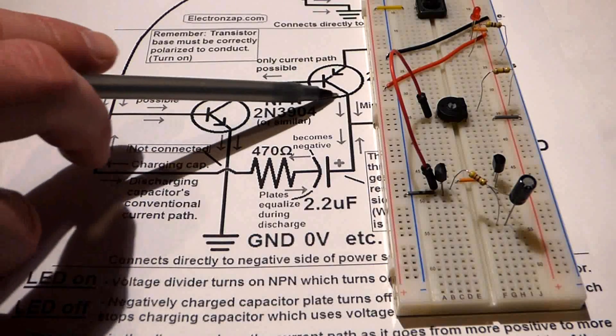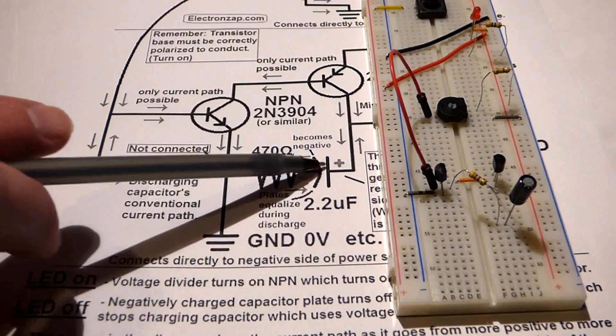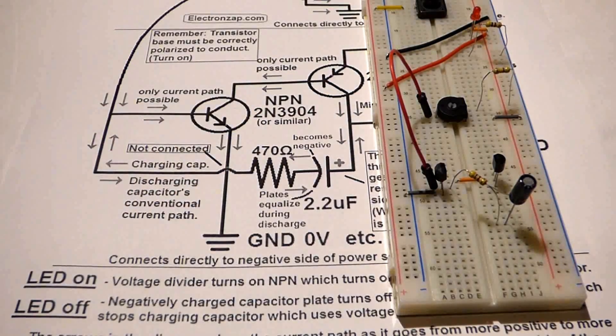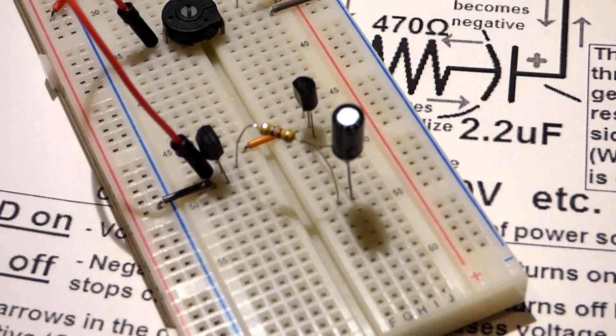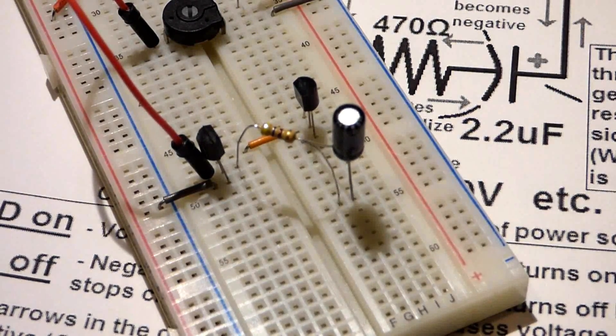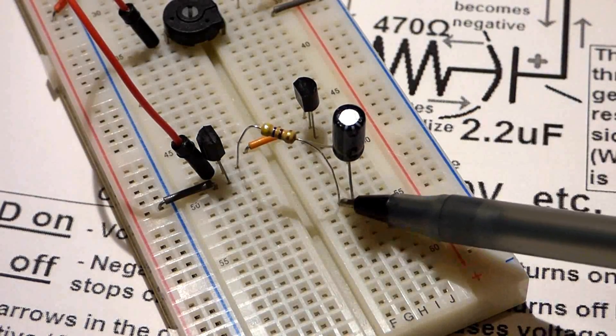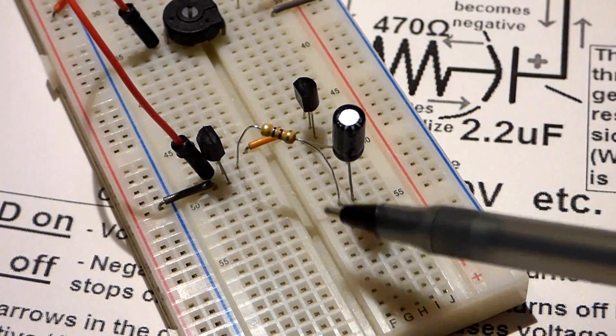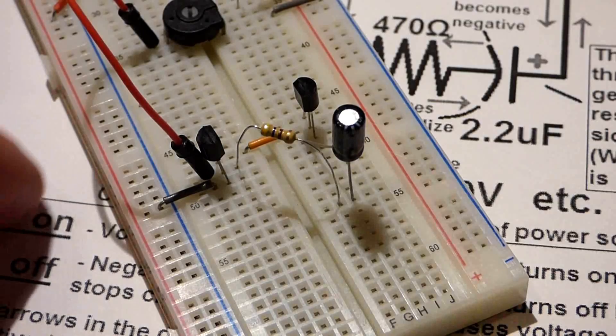And then the positive side of the electrolytic capacitor heads up to the collector of the PNP transistor. If you remember, the emitter is always the arrow, that makes this side the collector, so positive to collector.